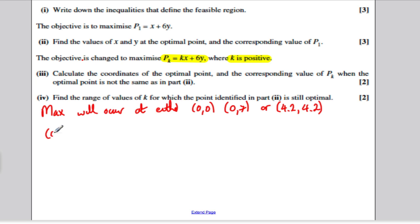So at 0,0, PK would be 0. That's not maximum. At 0,7, PK would have the value 6 times 7, which is 42 still. And at 4.2, 4.2, PK would have the value 4.2K plus 6 times 4.2, which is 25.2.